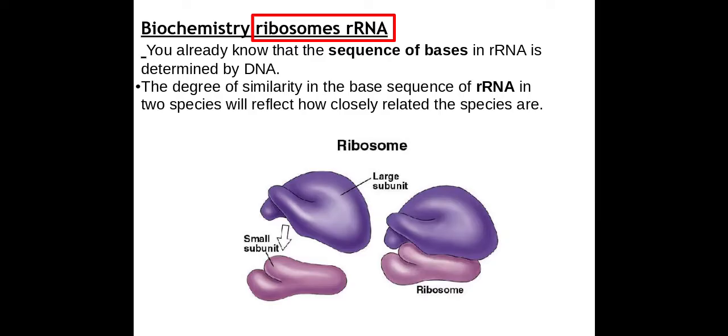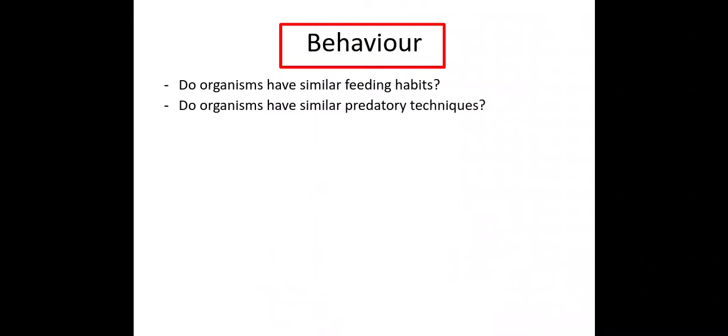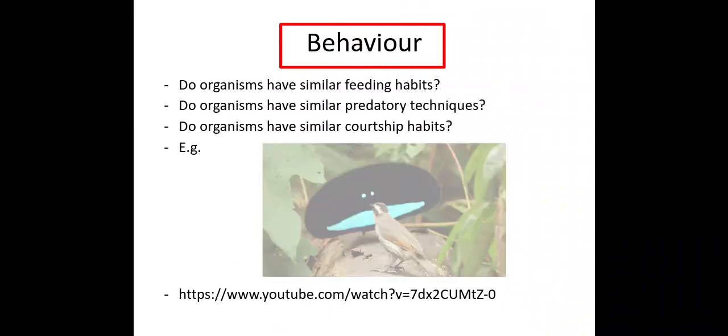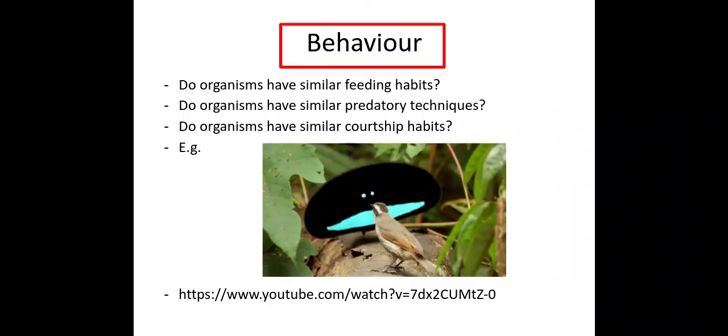The next one we need to know about is behavior. For example, do they have similar feeding habits, predatory behaviors, or courtship behaviors? The birds of paradise have certain courtship behaviors that differ between different species. This is another tool that scientists can use to classify organisms into groups or different species.